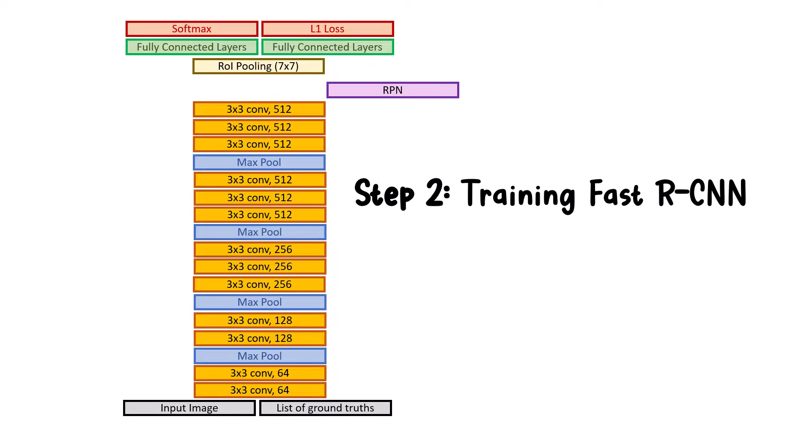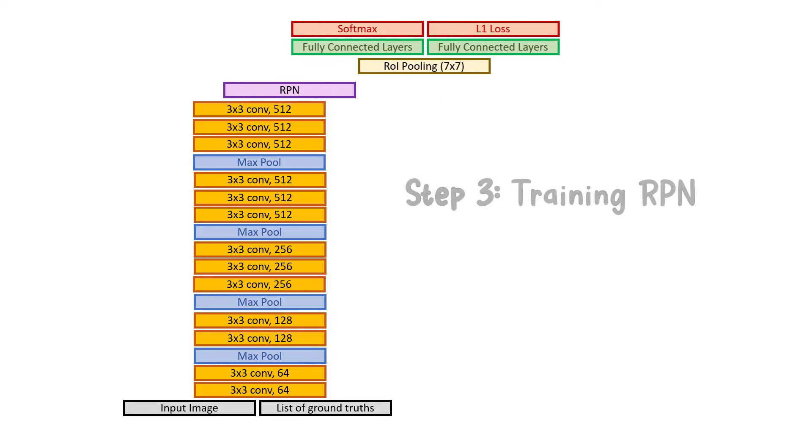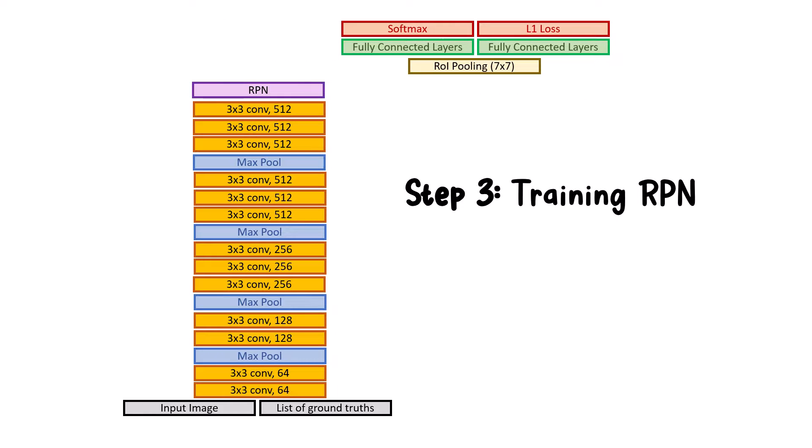In this step, RPN acts like selective search and is considered an external network whose weights wouldn't be updated throughout learning. It's exactly like training Fast R-CNN, which instead of selective search now we have RPN. In the third step, we train the RPN again to propose better regions. But wouldn't backbone weights be negatively affected? Actually, for current training they propose to make backbone weights freeze and only train the RPN module.